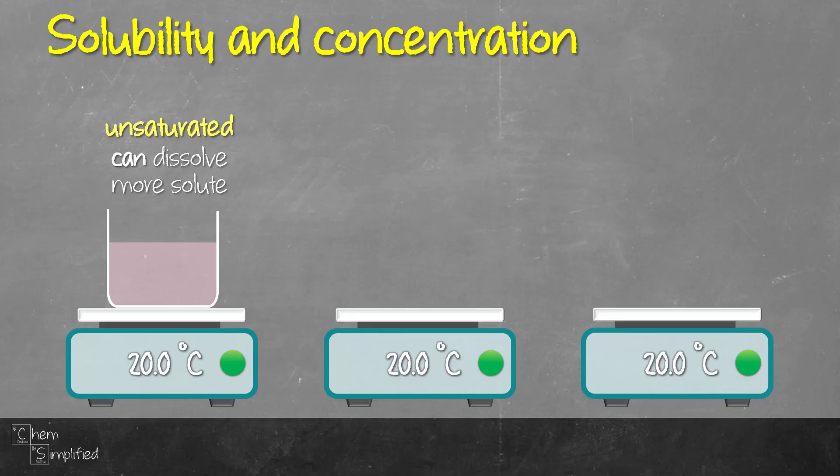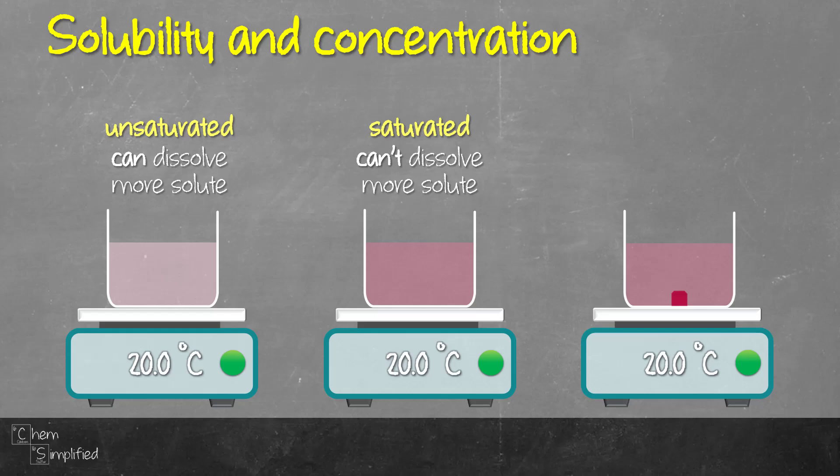Now if I continue on with that same beaker, but then I add more solute. And if I add a little bit more solute and it doesn't dissolve anymore, what I've produced is a saturated solution. Now if I continue on from the saturated solution and I add even more solute, it will not dissolve at the same temperature because it has already reached its saturation. So I cannot dissolve any more solute into the solution at the same temperature, which in our case right now is 20 degrees Celsius.